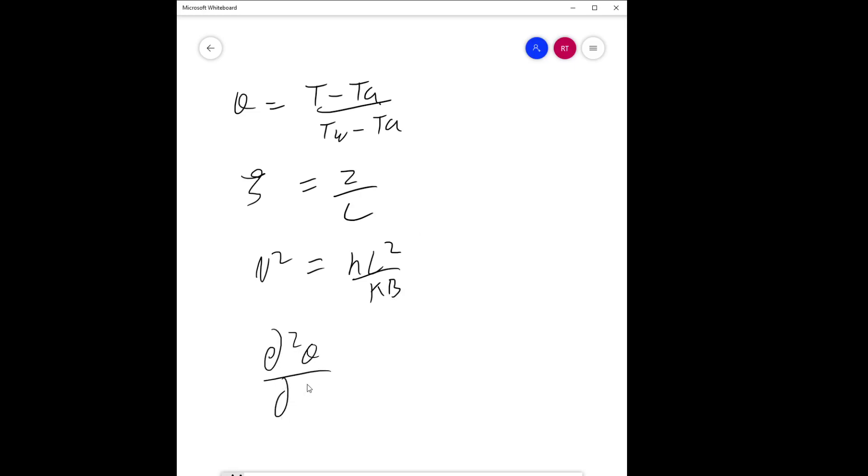We can substitute this into the equation as d²theta/d(epsilon)² minus n²theta. The boundary conditions are: at epsilon equals zero, theta equals one; and d(theta)/d(epsilon) at epsilon equals one is zero. Now once you solve this by integration...